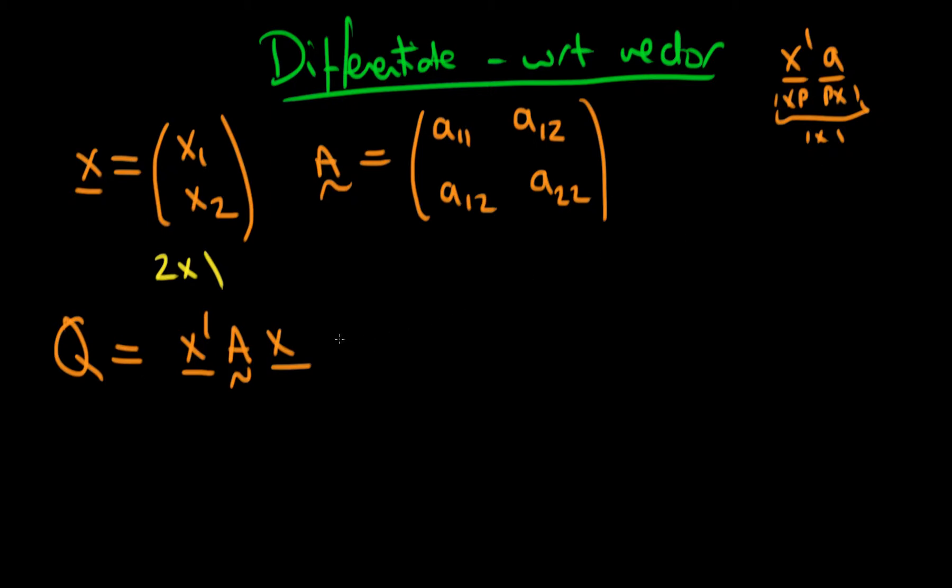Why is it referred to as the quadratic form? Well, this is quite evident if we write it out in full. This is just x1, x2 times our matrix A, a11, a12, a12, a22, times our original vector x.